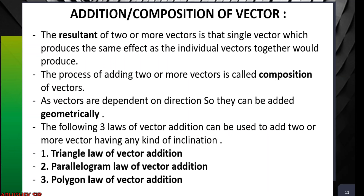The most important topic of the introduction is addition, or composition, or resultant of vectors. The resultant of two or more vectors is that single vector which produces the same effect as the individual vectors together would produce. The process of adding two or more vectors is called composition of vectors — it is simply the name for the process of finding the resultant.